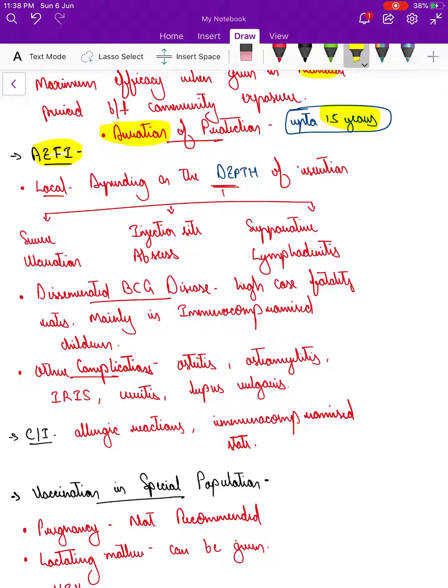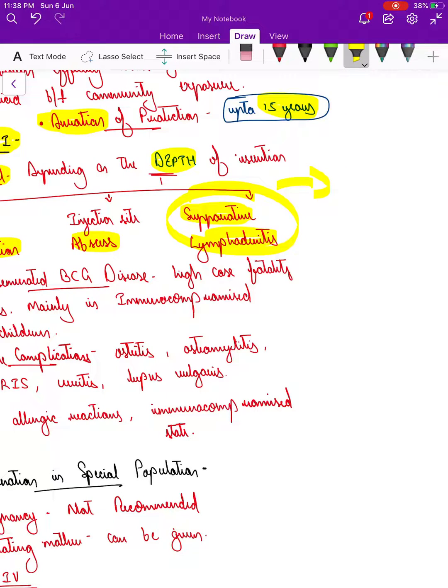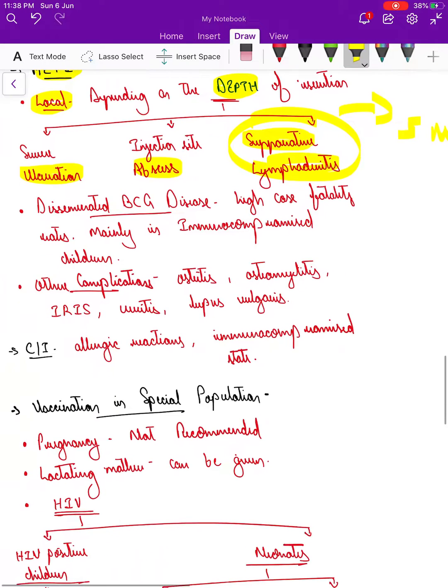Let's look at adverse effects following immunization, local and systemic. When it comes to local, depending on the depth of insertion, if there's inadvertent injection given, there can be severe ulceration, injection site abscess, or suppurative lymphadenitis.